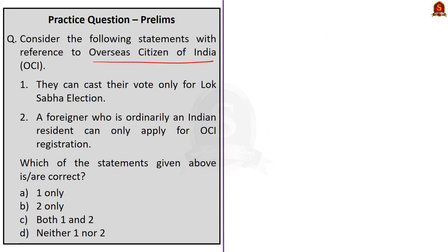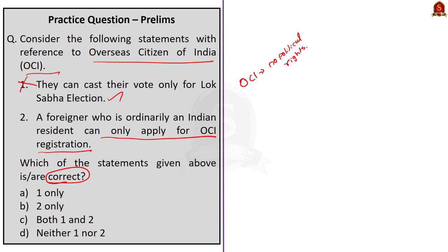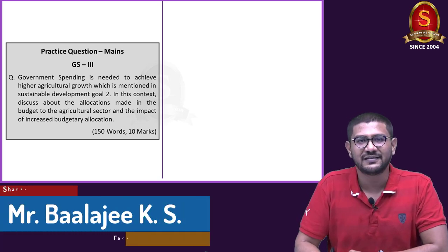Question 5 is about Overseas Citizens of India — find the correct statements. Statement 1: OCI card holders can cast their vote only for Lok Sabha elections — this is incorrect, as OCI card holders have no political rights like voting rights at all. Statement 2: a foreigner who is ordinarily an Indian resident can only apply for OCI registration — this is correct; ordinarily resident means staying in India continuously for a period of six months. Since statement one is incorrect and statement two is correct, the correct answer is option B — two only.